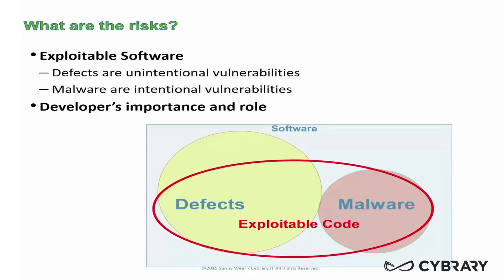So what exactly are the risks that we're trying to address as we cover this material? Mainly, in a nutshell, we're trying to address exploitable code. Exploitable code could be the result of various things. Two of the main areas would be defects or malware. Obviously, defects are unintended — these are programming bugs that programmers do and inadvertently create exposure points inside of their code. And malware would be that intentional vulnerability, something injected into the code to make it exploitable.